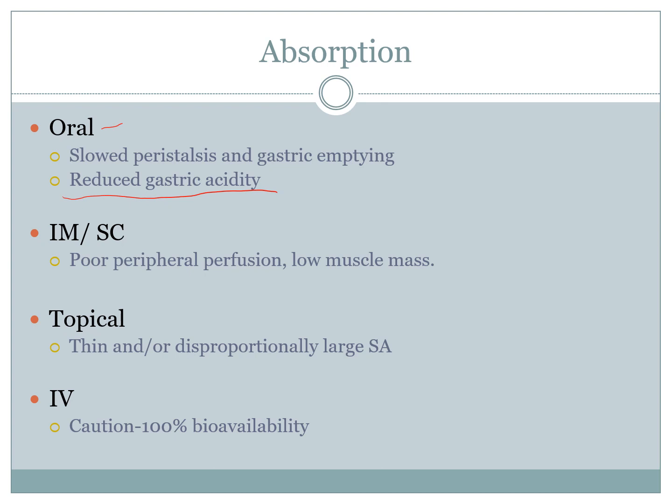For intramuscular or subcutaneous routes, both classes have poor peripheral perfusion, purely due to the disproportionately small amount of muscle mass found in the elderly and the very young. If you give an IM injection, there's very poor circulation to those areas and poor muscle mass, meaning absorption is reduced overall — again giving a reduced and delayed onset of the drug.